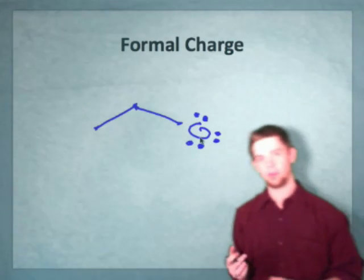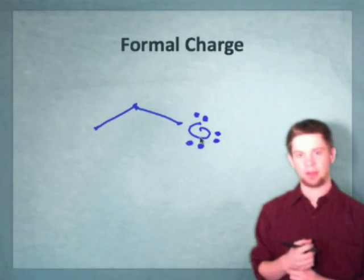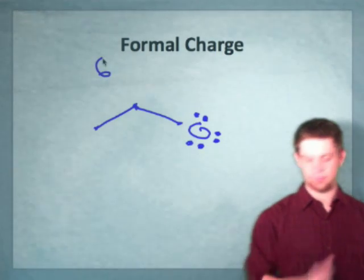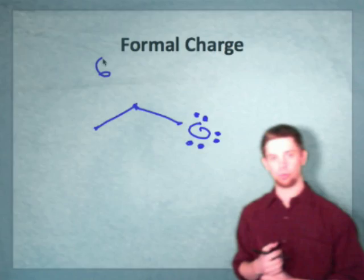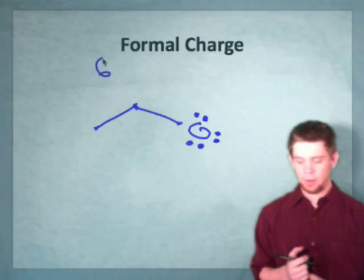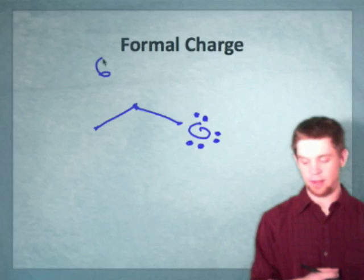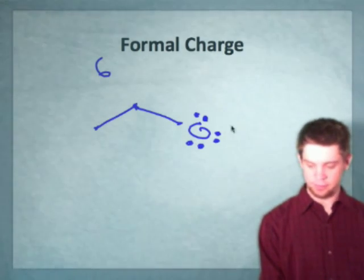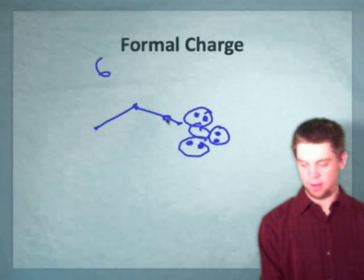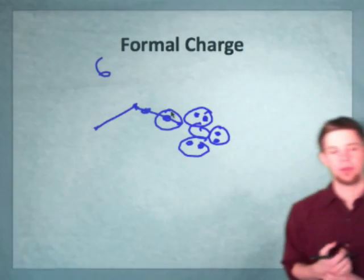To calculate formal charge, you consider the number of electrons that the neutral atom normally has. Oxygen being a period two element, and being in group 16, it normally has six valence electrons. However, in the structure we see here, formally oxygen possesses seven electrons, possesses six electrons in the form of these lone pairs, and then one more from this bond here. So we consider that electron as being belonging to the oxygen.